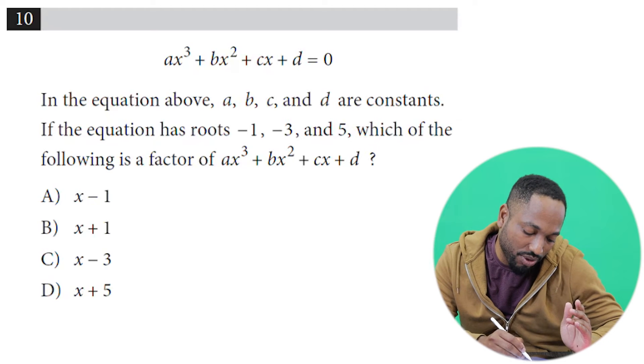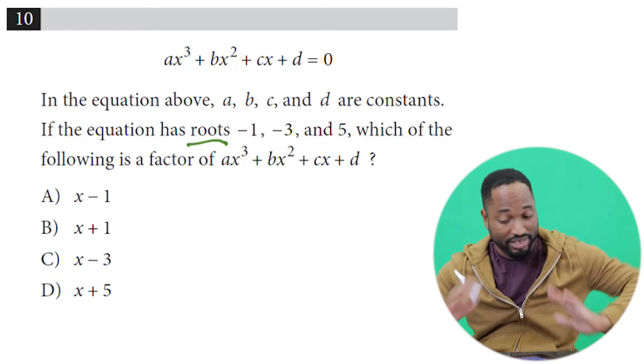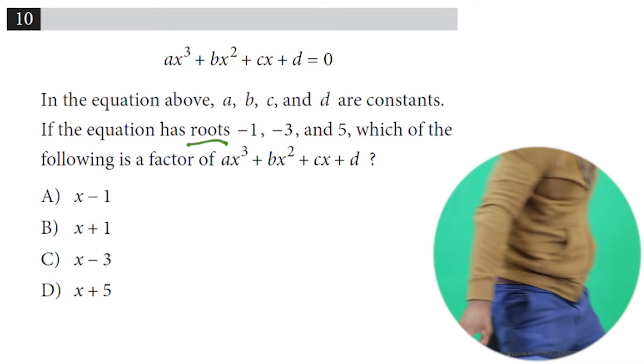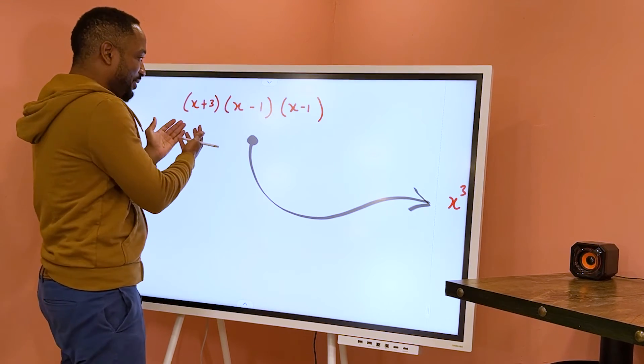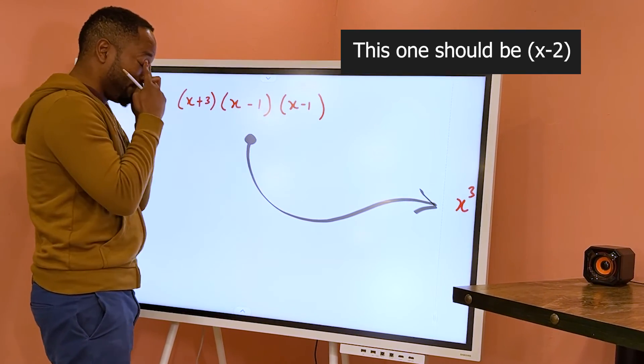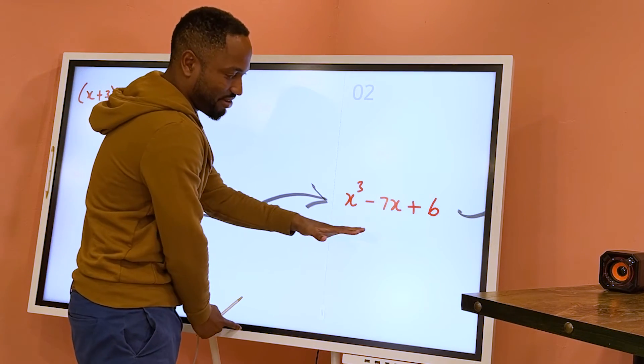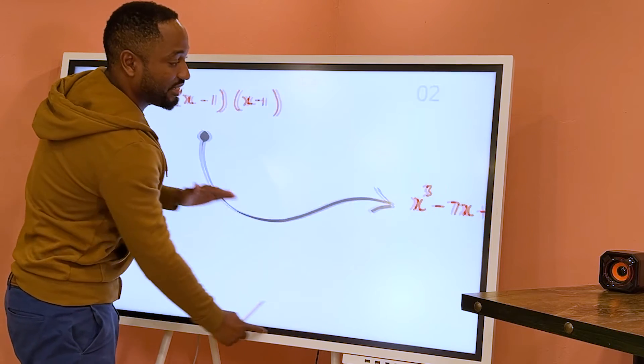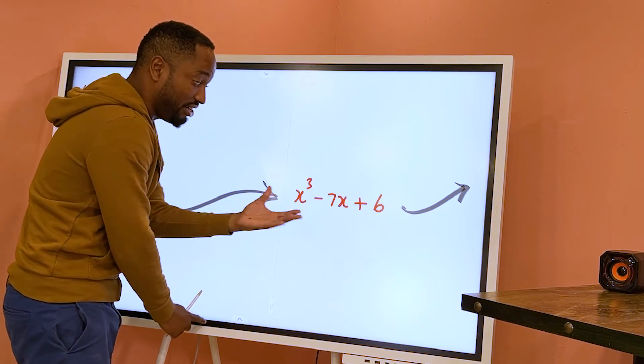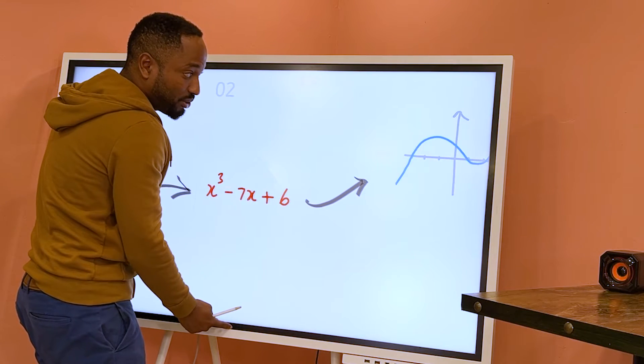Another question. This one is a little different because they're using this word 'roots,' but it's the same concept. Let me elaborate. This is actually a polynomial: (x + 3)(x - 1)(x - 2).